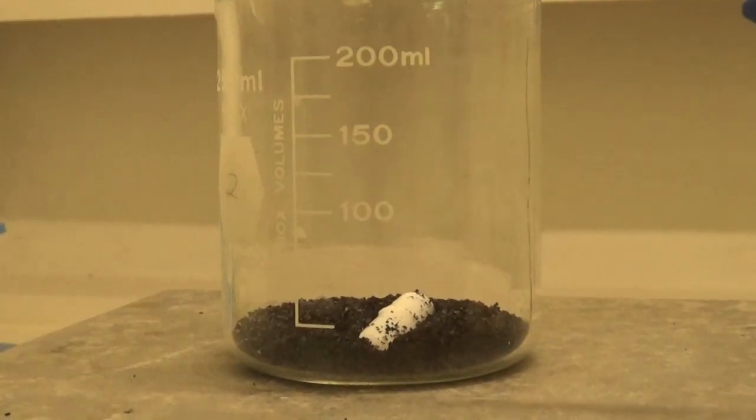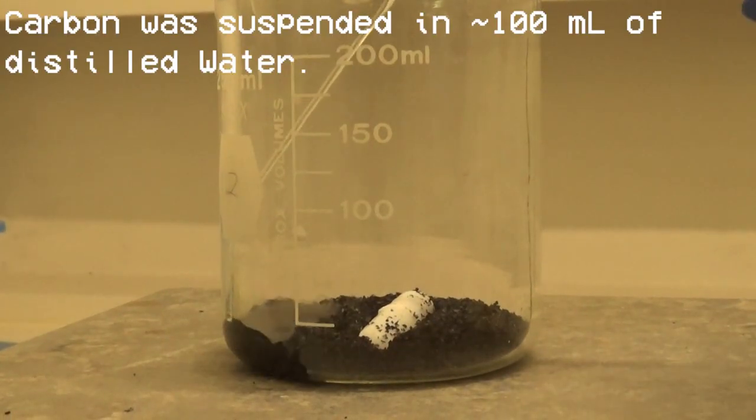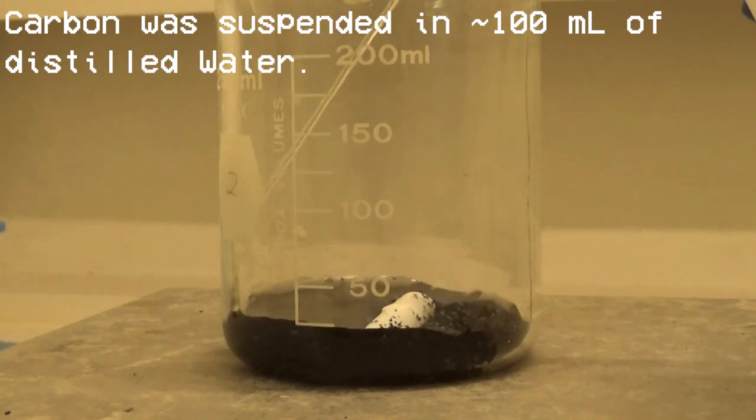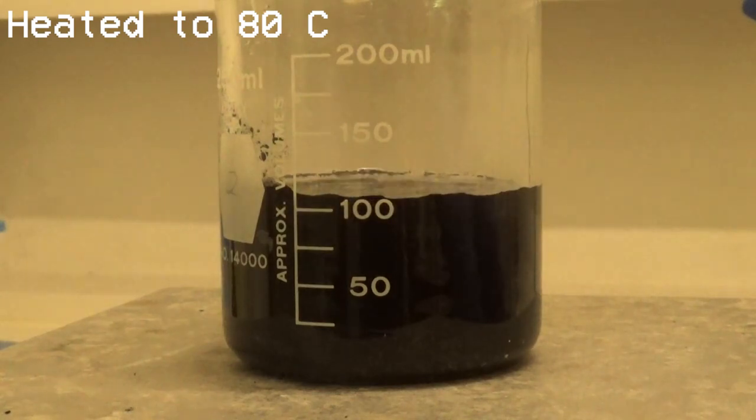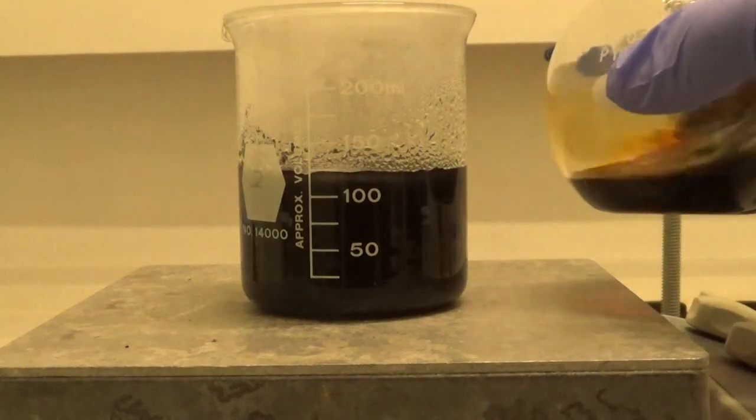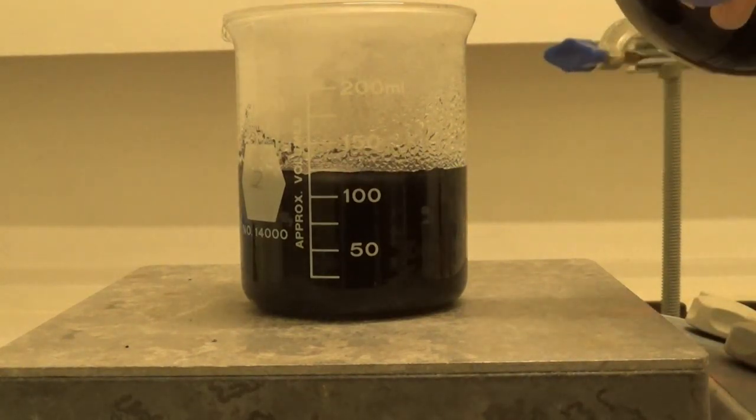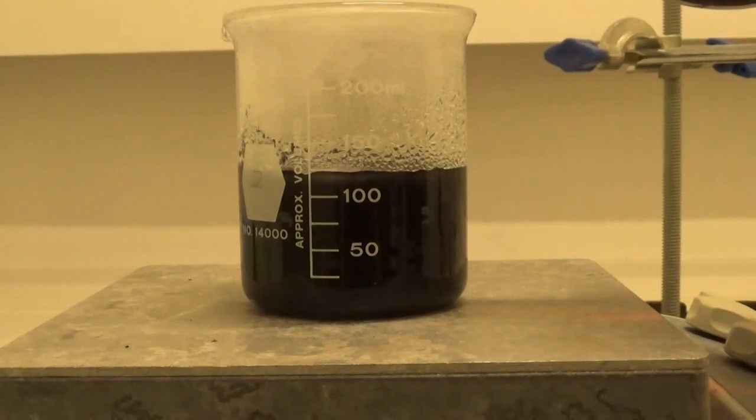I added my acid-washed carbon to a beaker and covered it in water. I then got this heating on the hot plate and heated it up to 80 degrees celsius. At the same time, I heated up the palladium solution so the temperature would stay around 80C when I poured it in.